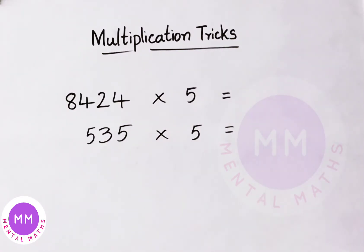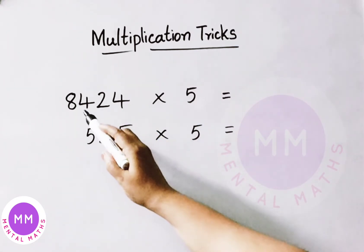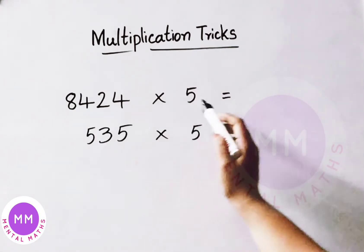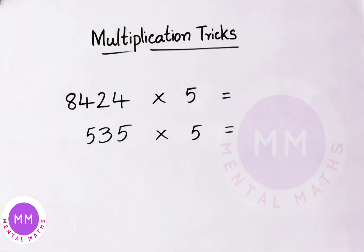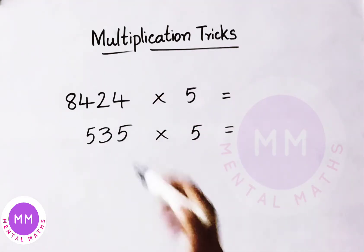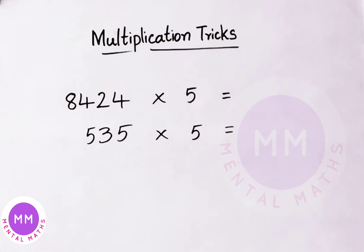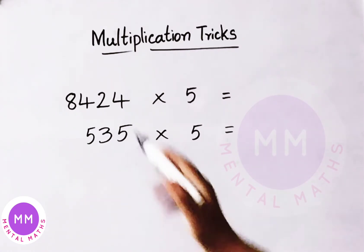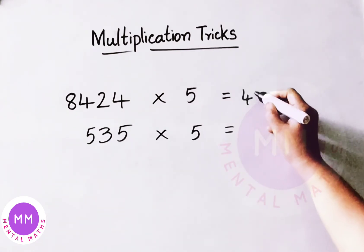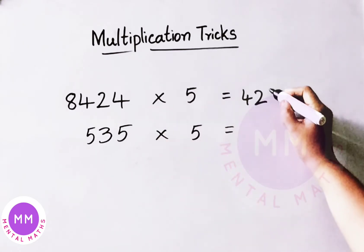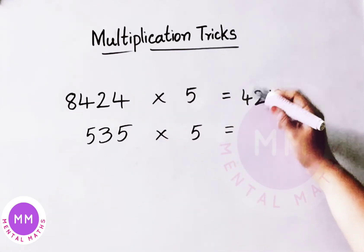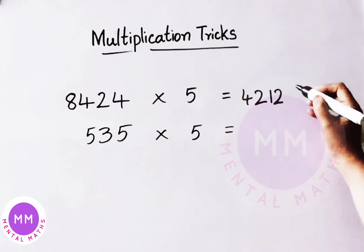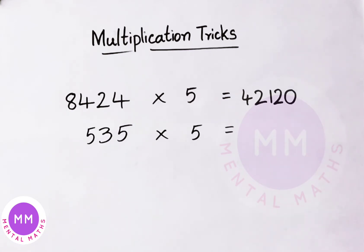Next, in these examples, how we shall multiply any number by 5 quickly, we shall see now. Here the number is 8424 multiplied by 5. What we shall do is: divide the given number by 2, then multiply it by 10. 84 half is 42, 24 half is 12. Now this value multiplied by 10, so add 0 at last. The answer is 42,120.